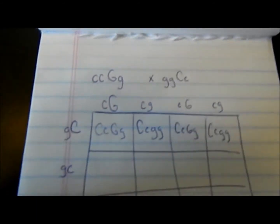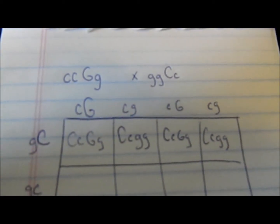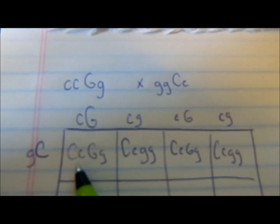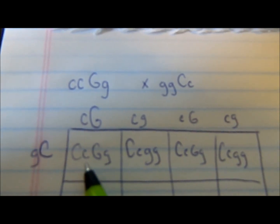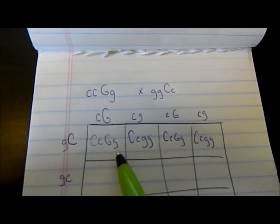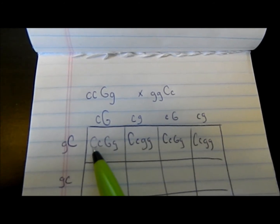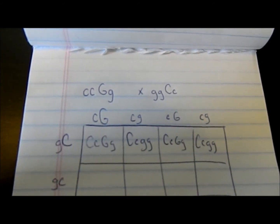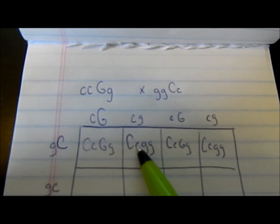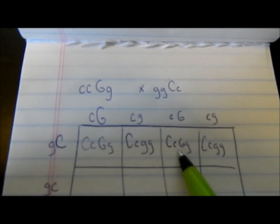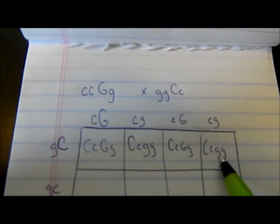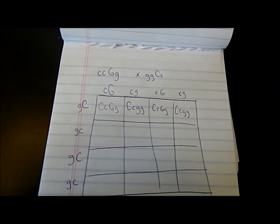If you look at this line — here is a double het, caramel ghost, carries one copy of caramel and one copy of the ghost gene. These two big ones are normal genes so it's going to look normal but it's going to be a double het. In this case you have a ghost that's het caramel, in this case you have double hets, and in this case it's a ghost het caramel.